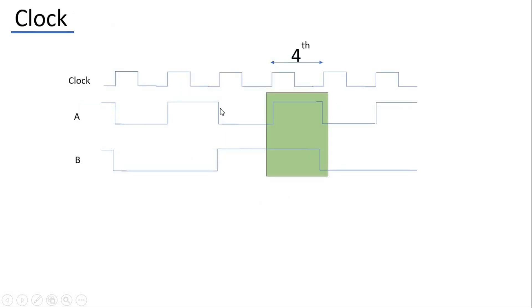In digital circuits we use a periodic square wave which has a 50% duty cycle as a clock to synchronize all the waveforms timely. As you can see in the figure, both A and B waves are high at the fourth clock cycle. That's all for this class, thank you.